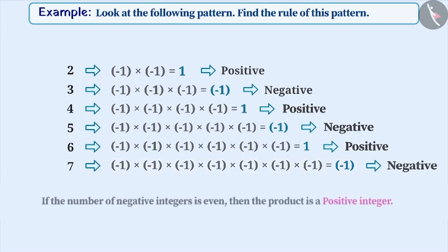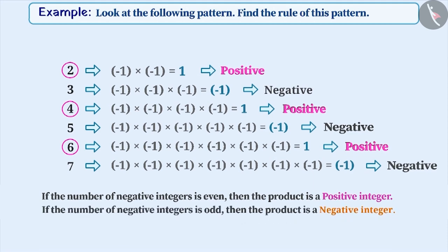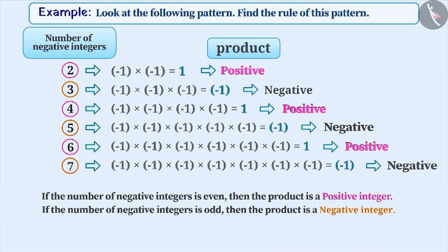Therefore, we can say that if the number of negative integers getting multiplied is even, then the product is a positive integer. If the number of negative integers getting multiplied is odd, then the product is a negative integer. This rule is applicable for multiplication of any two or more negative integers.